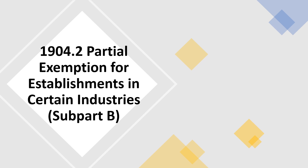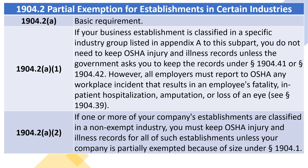1904.2 — Partial Exemption for Establishments in Certain Industries, Subpart B. 1904.2, A — Basic Requirement.